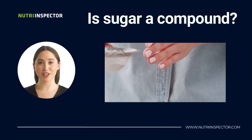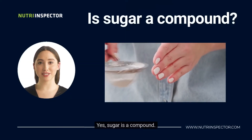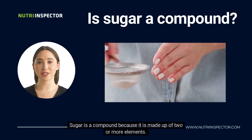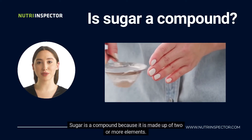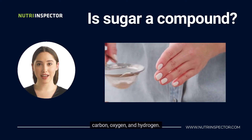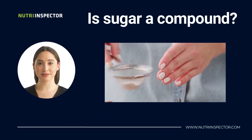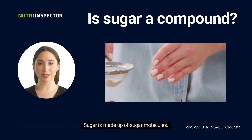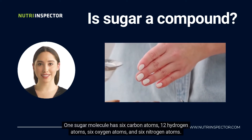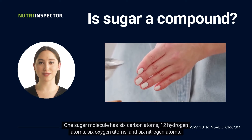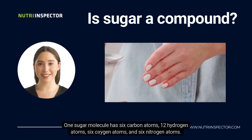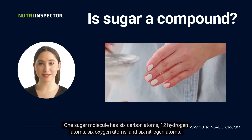Is sugar a compound? Yes, sugar is a compound. Sugar is a compound because it is made up of two or more elements: carbon, oxygen, and hydrogen. Sugar is made up of sugar molecules. One sugar molecule has six carbon atoms, 12 hydrogen atoms, six oxygen atoms, and six nitrogen atoms.